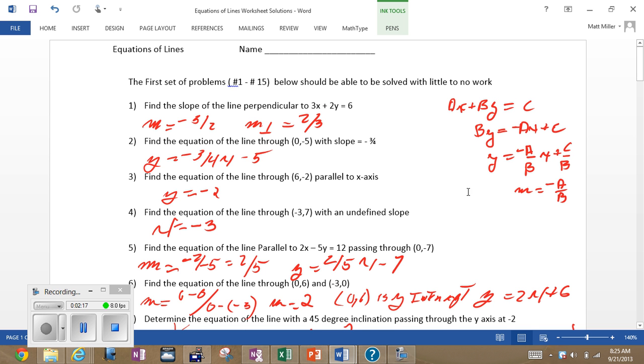And number six, the equation passing through these two points. Well, one of the points, zero, six, is the Y-intercept point. Using the two points, we find the slope, Y2 minus Y1 over X2 minus X1. That ends up being two, and therefore, we have the slope and the intercept. We have the equation of the line.